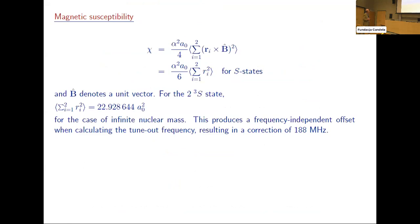There's also a magnetic susceptibility term that we calculated, and that gives a correction of 188 megahertz. Remember, the experimental uncertainty is about 260 megahertz, so this is significant in terms of the comparison with the experiment.